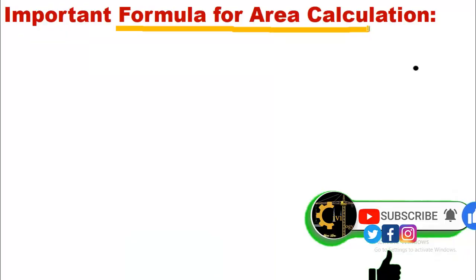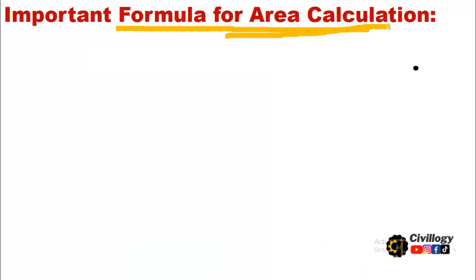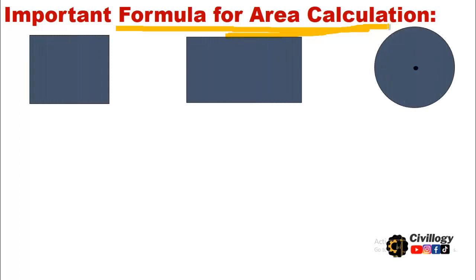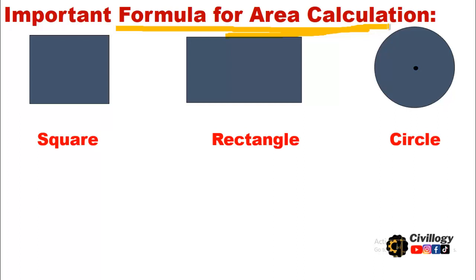First of all, some important formulas for area calculation. The first one is square, the second is rectangle, and the third one is circle. These are the normally used geometrical figures in construction, for example for beams, columns or pillars, and slabs. You will have to learn two basic formulas for each shape.